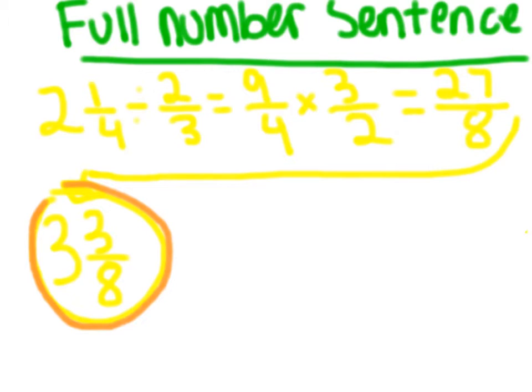And the way we got 3 and 3 eighths is because since 27 eighths is an improper fraction and we want to make it into a proper fraction, we know 8 times 3 equals 24, and that's as close as it can get. So 24 plus 3 equals 27. So then you do 3 because 8 times 3 is 24, and then 8 as the denominator because we're doing it in groups of 8. So 3 and 3 eighths.